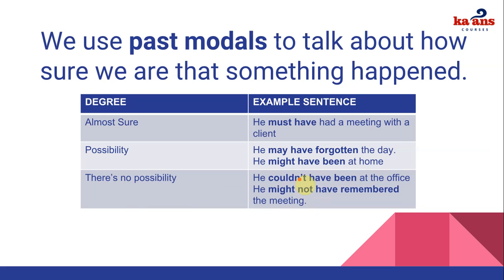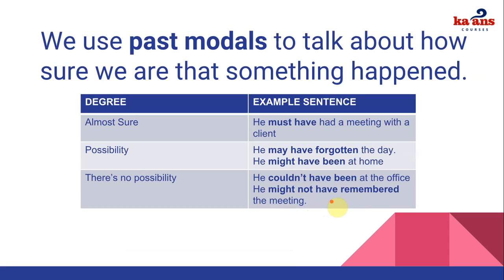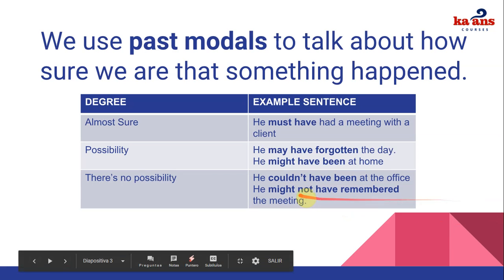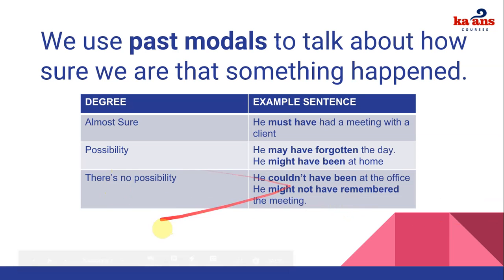When there's no possibility, we use the negative forms: 'couldn't have' or 'might not have.' For example: 'He couldn't have been at the office' or 'He might not have remembered the meeting.' Imagine you're at a meeting and someone says, 'He was a little distracted — he might not have remembered the meeting.' These express impossibility or no possibility.